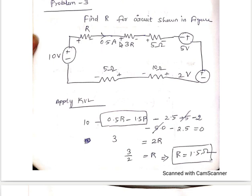So 3 into 0.5 is 1.5R, then minus 0.5 into 5 is 2.5. Plus, I am writing this as plus because this is from potential drop to rise, so plus 5. Again this is plus 2, minus, so minus 2, then 0.5 into 10 is minus 5.0, then 0.5 into 5 again is minus 2.5, equal to 0.